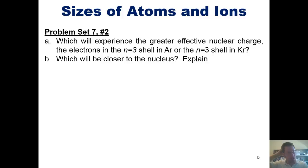That takes us to a set of lecture problems from the problem sets that I give my students in class. You'll remember from an earlier video that I asked and explained which will experience a greater Z effective or effective nuclear charge, the electrons in the n=3 shell in argon or in the n=3 shell in krypton. That leads us to the second question, which of those electrons will be closer to the nucleus? Explain.